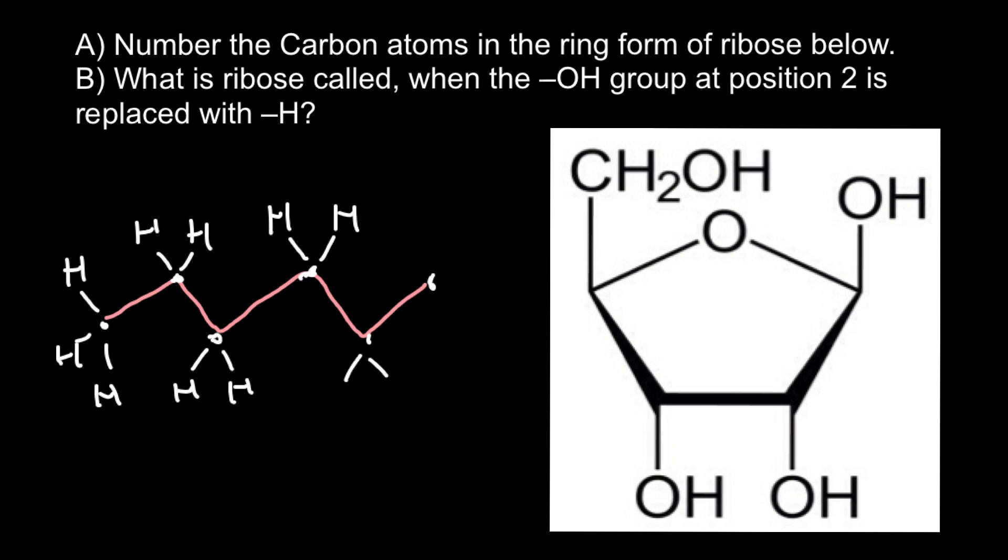So usually we do not show all this information shown here with white color because for us just this broken line would be enough to count number of carbons.